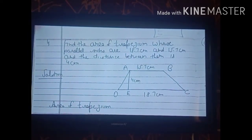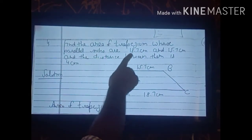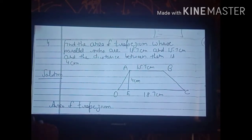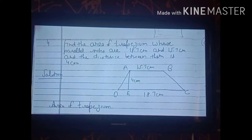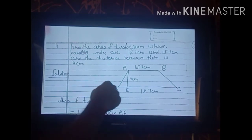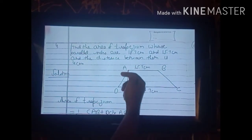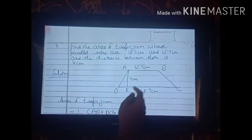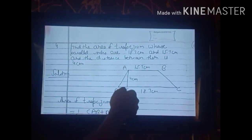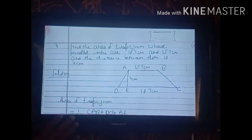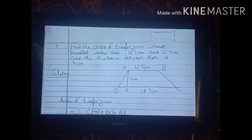Now see the fourth sum: find the area of the trapezium whose parallel sides are 18.7 cm and 15.7 cm and the distance between them is 4 cm. All values are directly given, so we simply apply the formula.